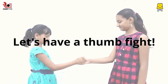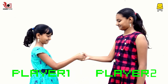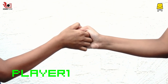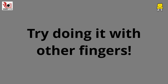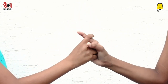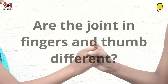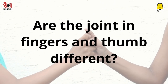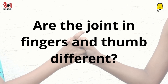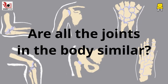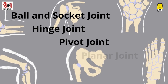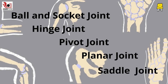Let's have a thumb fight. Player one wins! Doing this with other fingers is tricky. Does it mean that the joint in the fingers and the thumb are different? Are all the joints in the body similar? Let's find answers to all these questions in the following videos.